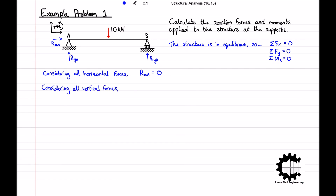Considering the vertical forces, we have the weight of 10kN applied downwards — taken as negative — and two vertical reaction forces RYA and RYB applied upwards — taken as positive. Therefore the sum of all vertical forces is equal to RYA plus RYB minus 10, which equals zero. Finally, we must consider the moments applied to point A. Previously we learned that the moment is equal to the magnitude of a load multiplied by the perpendicular distance from that load to the point.